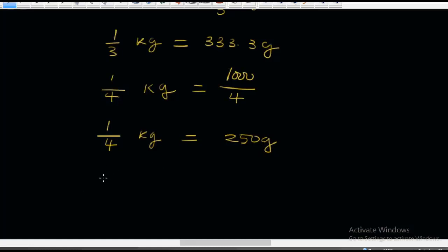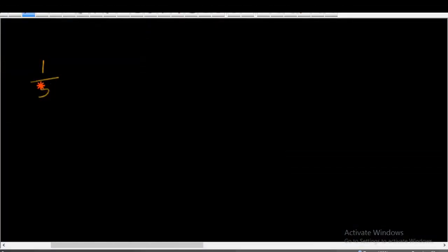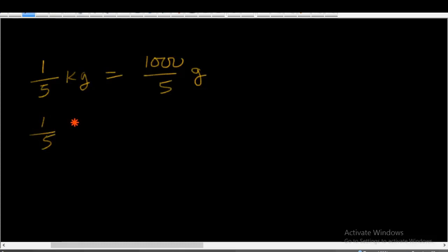What if we divide by 5? In the same way, 1/5 kg is the same as 1,000 over 5 grams. So 1/5 kg is equal to 1,000 divided by 5, which gives 200 grams.